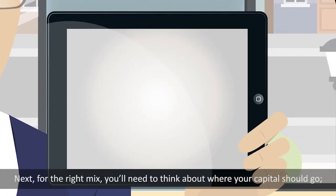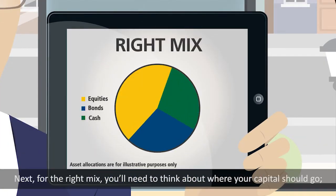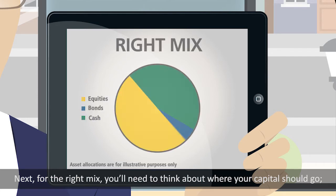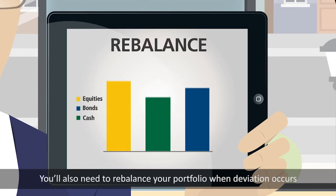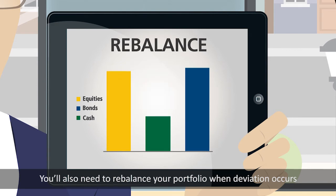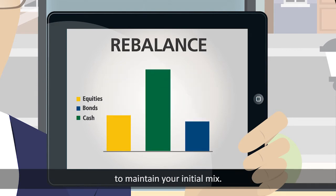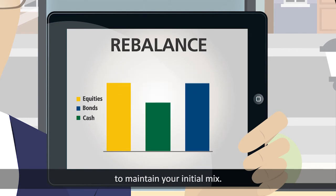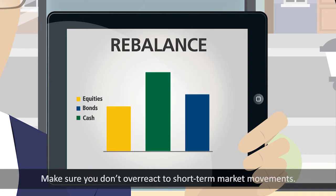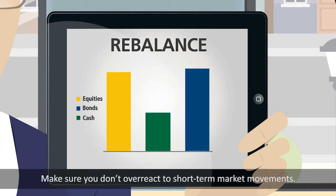Next, for the right mix, you'll need to think about where your capital should go. You'll also need to rebalance your portfolio when deviation occurs to maintain your initial mix. Make sure you don't overreact to short-term market movements.